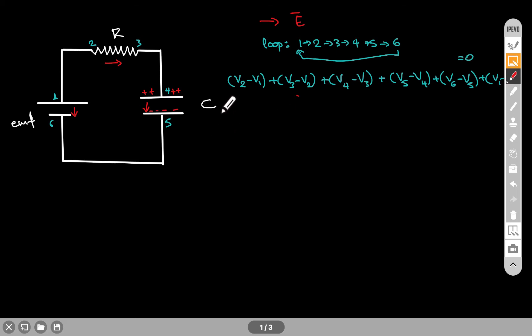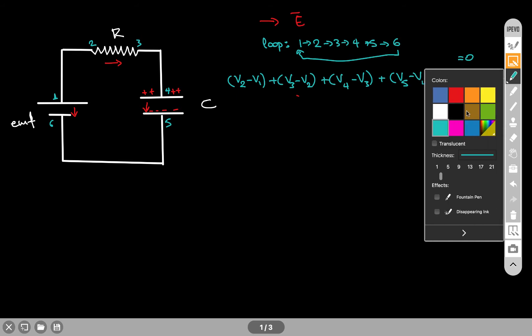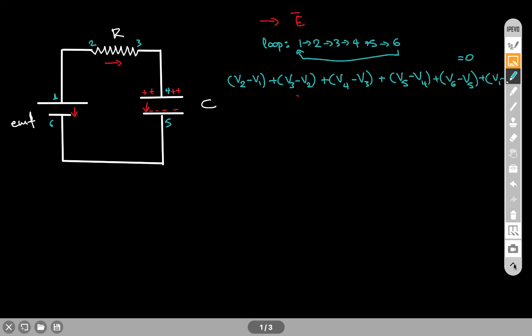In this video, I will apply Kirchhoff's loop rule on an RC circuit where I charge the capacitor. What I have here is EMF represents the potential difference across the battery, and R is the resistor, C is the capacitance of the capacitor.